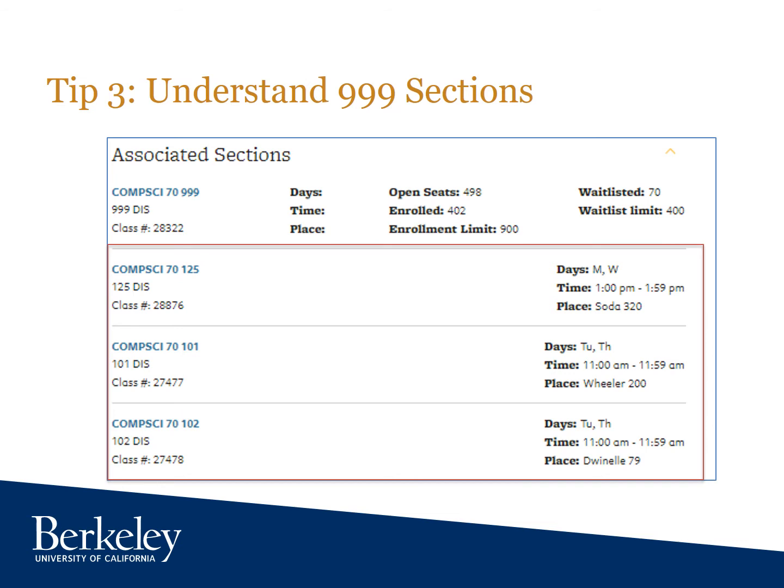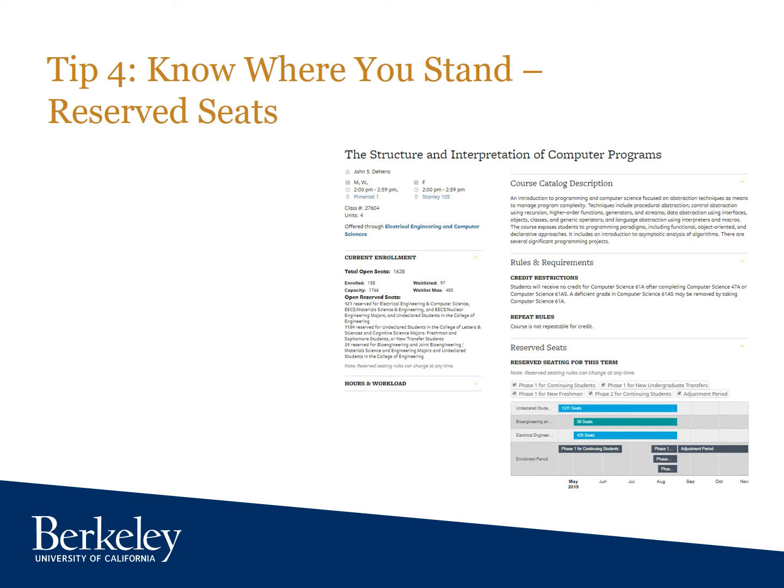Tip four: know where you stand with reserved seating. During enrollment phases one and two, we set aside reserved seats for certain student populations. For most computer science classes, that means we save seats for our declared majors to give them access to the seats they need to complete their classes on time so they can graduate on schedule. Once the adjustment period begins, the reserved seating caps come down and the system will move people into any available seat based on waitlist position.